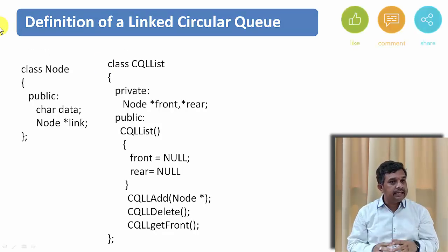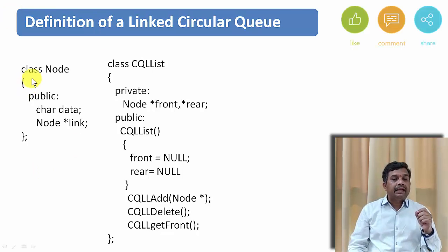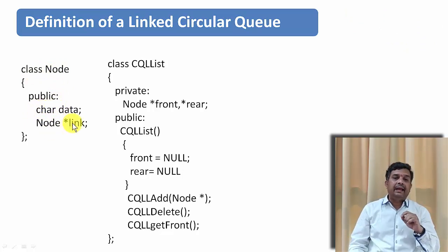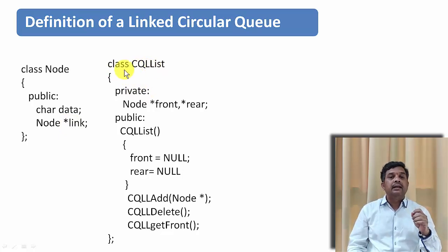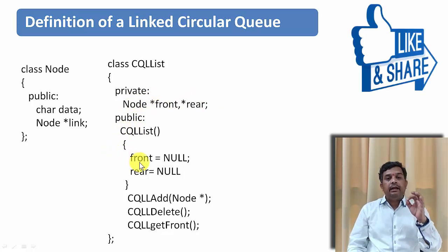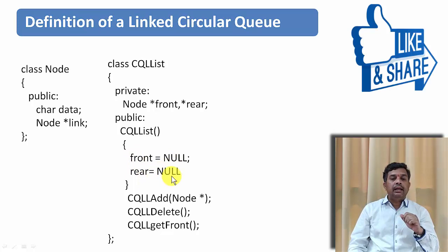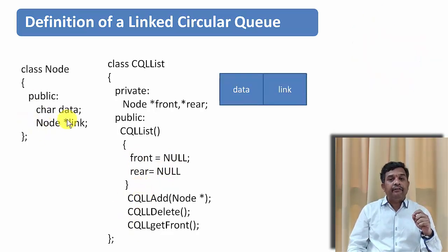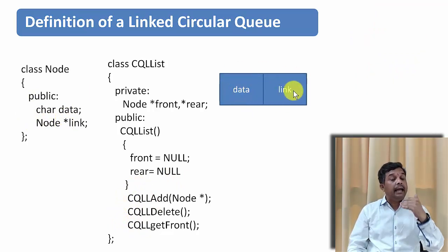Let us see the class definition of a circular queue. We will take a class called Node which has two parts: a data part and a link part. We will take one more class CQList (circular queue linked list) with two pointers — front and rear — of type Node. In the constructor, front and rear are initially pointing to null. Each node contains a data part and the address of the next node.